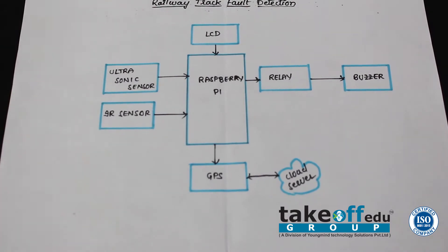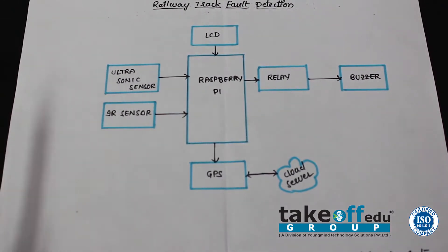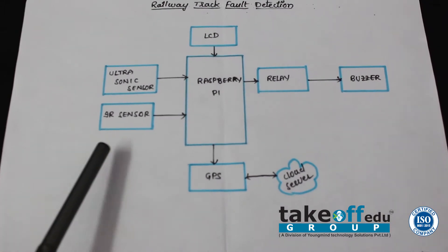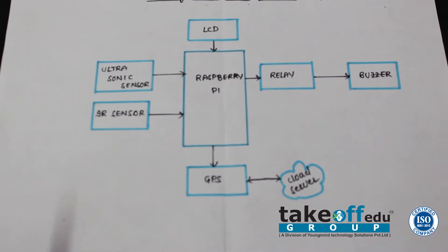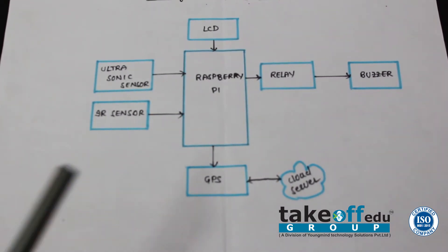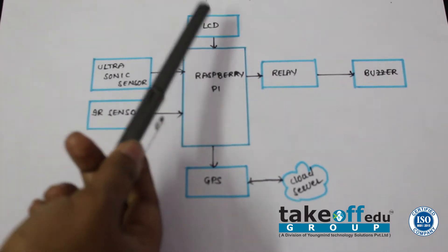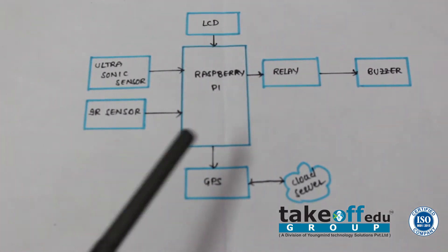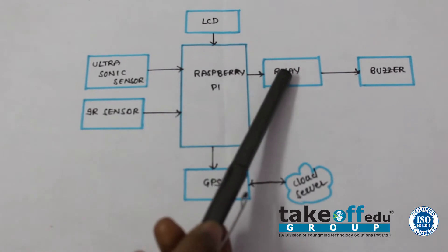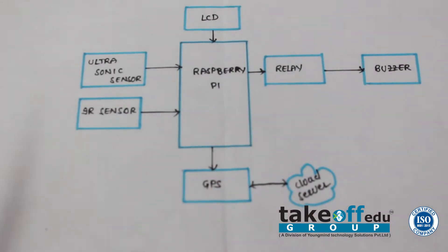This is the basic block diagram of our project. Here we are using an ultrasonic sensor and an IR sensor. You may use either of these sensors. We are using an LCD to display the entire process, and a relay and buzzer. The relay is used to activate the buzzer.